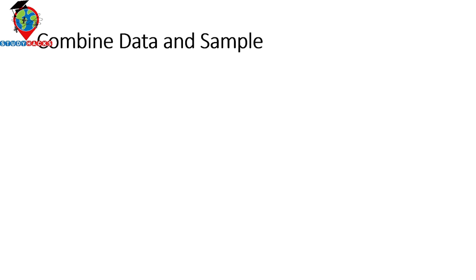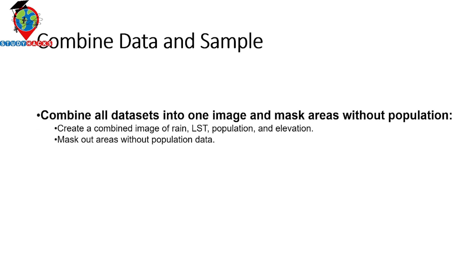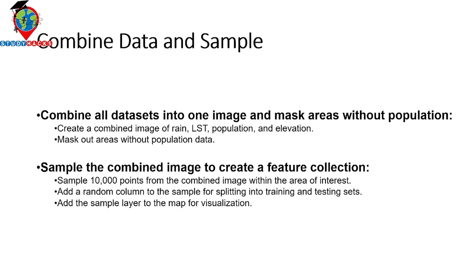The second step is to combine the data and sample. We have to combine all datasets into one collection — create a combined image of rainfall, LST, population, elevation, and any other dataset into one variable. Then mark areas without population data. After that, we collect samples — I take 10,000 points from the combined image within the area of interest, and add a random column to the sample for splitting into training and testing datasets.